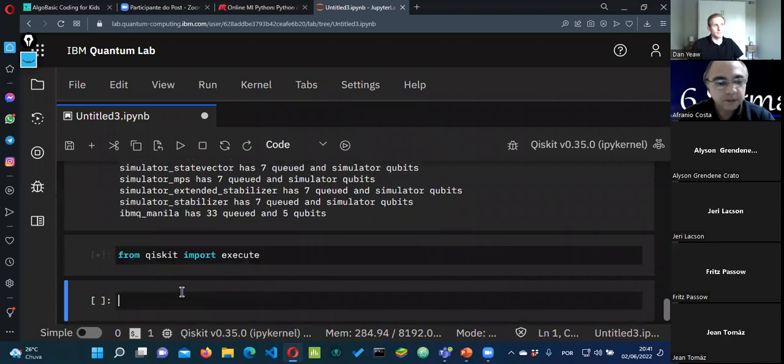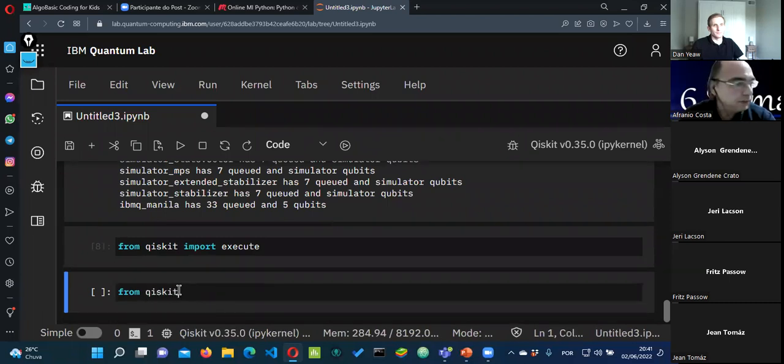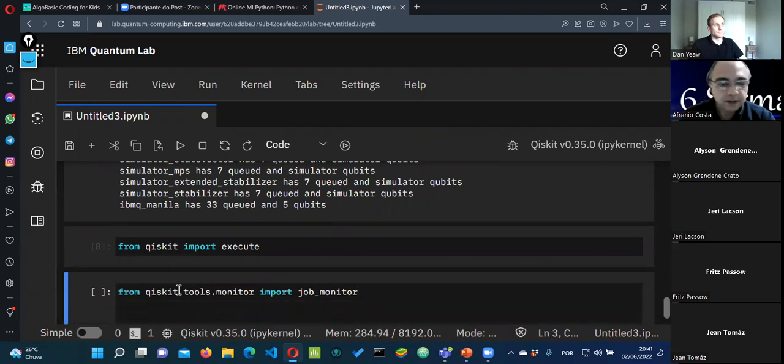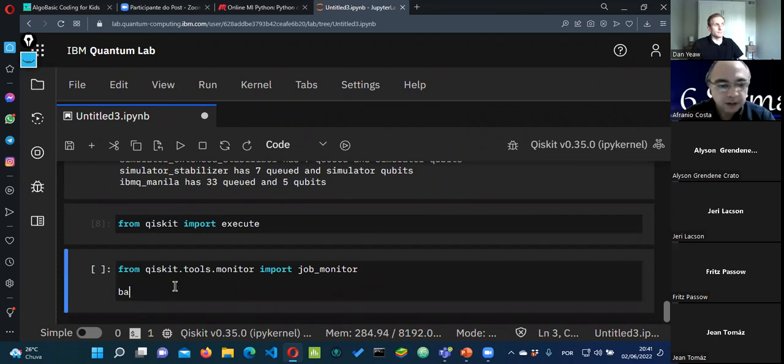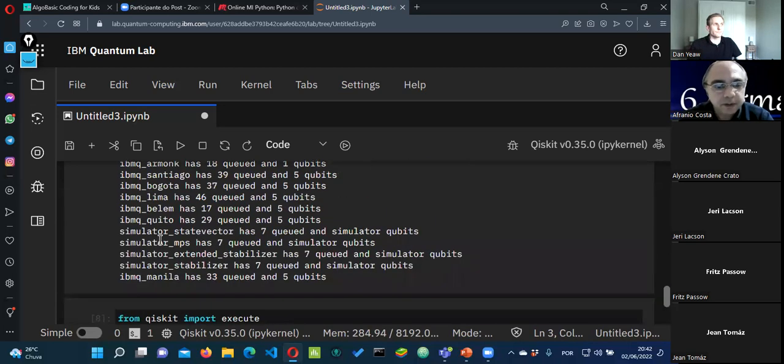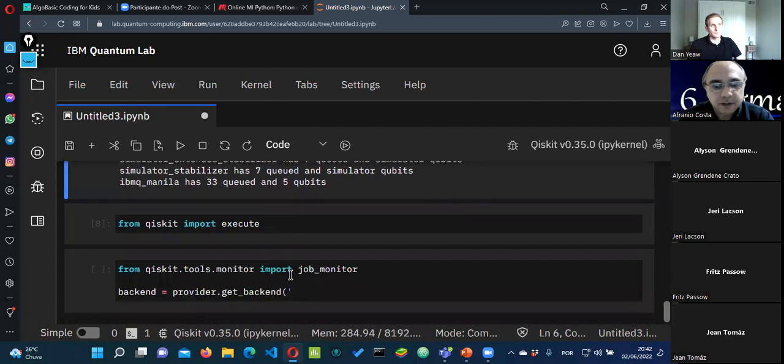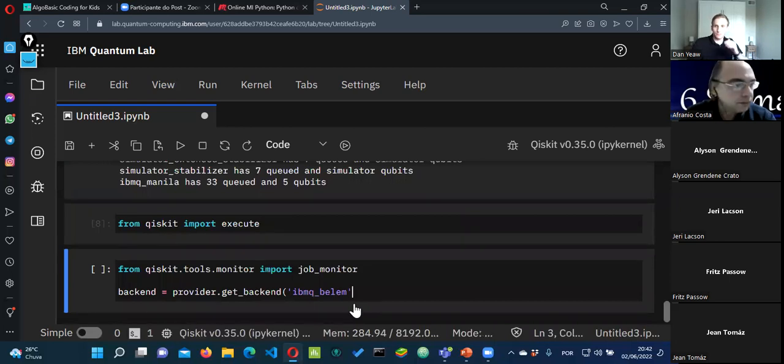Then we have here the list of names of the backends available. And I'm trying to find a backend that's not so busy. Actually, we have a lot of busy backends right now. Yeah, I will show you how can we execute the job, but I'll go back to the material and show you the results. Because all of them have a lot of jobs running right now. Normally we have five, four, seven at the maximum, but now it's a lot of them.